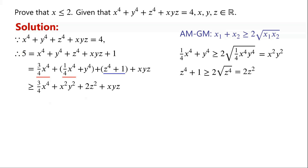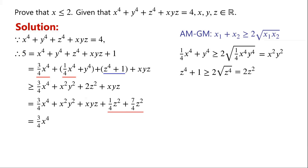2z squared can be written as a quarter times z squared, plus seven-quarters times z squared. We can now write: three-quarters times x to the power of 4, plus x squared y squared, plus xyz, plus a quarter times z squared can be written as the quantity xy plus one-half z, all squared. Then plus seven-quarters times z squared.